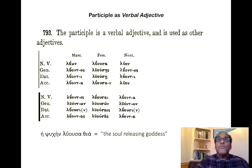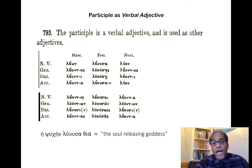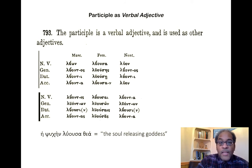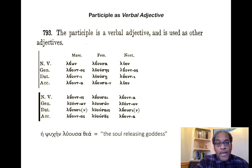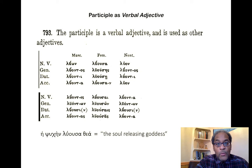A participle is a verbal adjective and is used like other adjectives. Usually in English, the most common participle is the -ing ending — so, 'loosing.' But in Greek, it will be fully declined just like any adjective, having a masculine, a feminine, and a neuter, and a singular and a plural. So: luon, luousa, luon, luontos, luouses, luontos, etc.